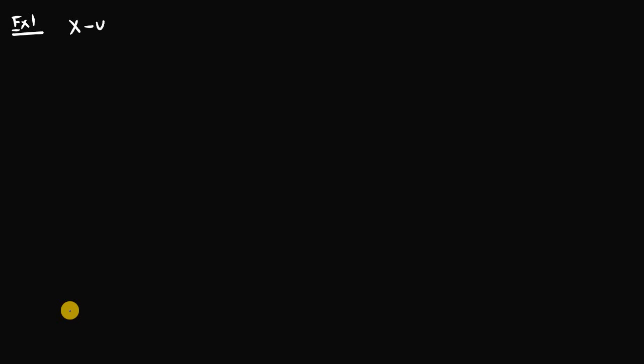Example one is going to be very easy. It's going to be x minus y is equal to three, and y is equal to four. The question asks us to use back substitution to solve for x and y, our unknown variables. We can just plug y equals four into equation one and solve for x, because we already know what y is — it's given.